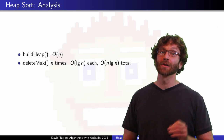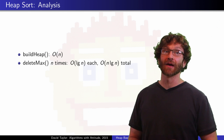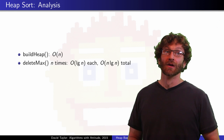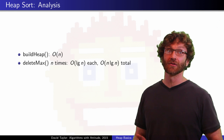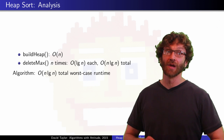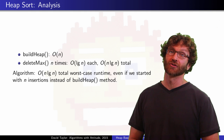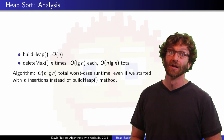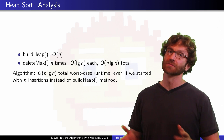For our analysis, we had a build heap operation, which was order n time, and n delete max operations, order log n worst case each. That's n log n total time, worst case for the delete maxes, and also for the algorithm as a whole. It would still be, asymptotically, order n log n, even if you ran n insertions to start the algorithm, instead of the linear time build heap, but since we have a perhaps slightly faster way to start, let's go that way.